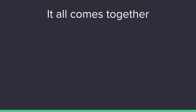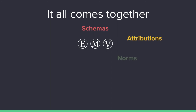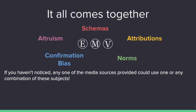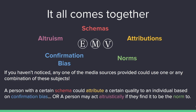So, here we are — it all comes together. With ethics, morals, and values showing how schemas, attributions, norms, confirmation biases, and acts of altruism are formed, it can be seen how each of these subjects can inherently affect the other. Any of the media sources provided could use one or any combination of these subjects. For example, a person with a certain schema could attribute a certain quality to an individual coming from a certain confirmation bias, or a person may act altruistically if they find it to be the norm to. You can mix scenarios all day and find how each subject relates to one another. As cultures and societies change and evolve, so do the ethics, morals, and values of the people within them. Thank you for watching my presentation. Have a good rest of your day.